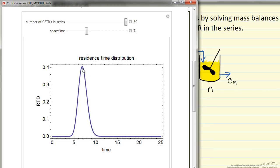Notice this residence time maximum is very close to 7, and so a large number of CSTRs can be used to model a plug flow reactor.